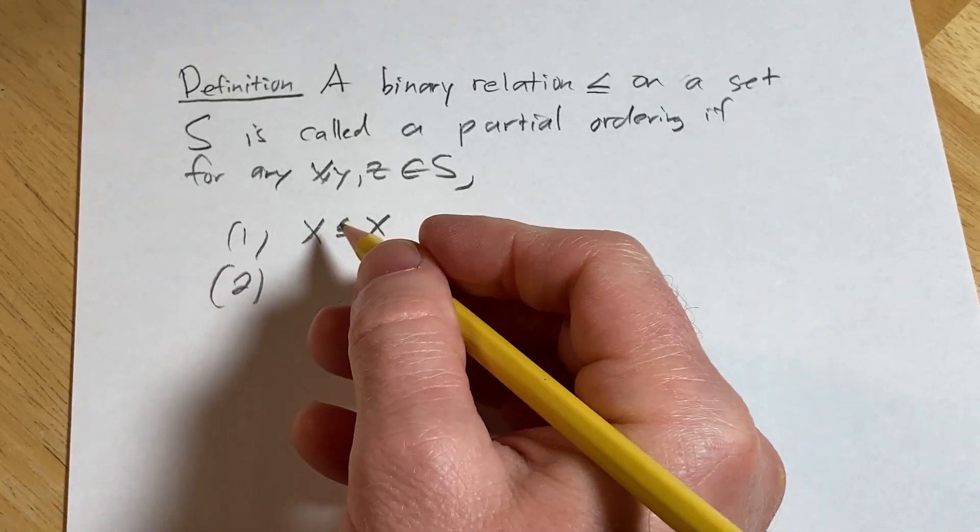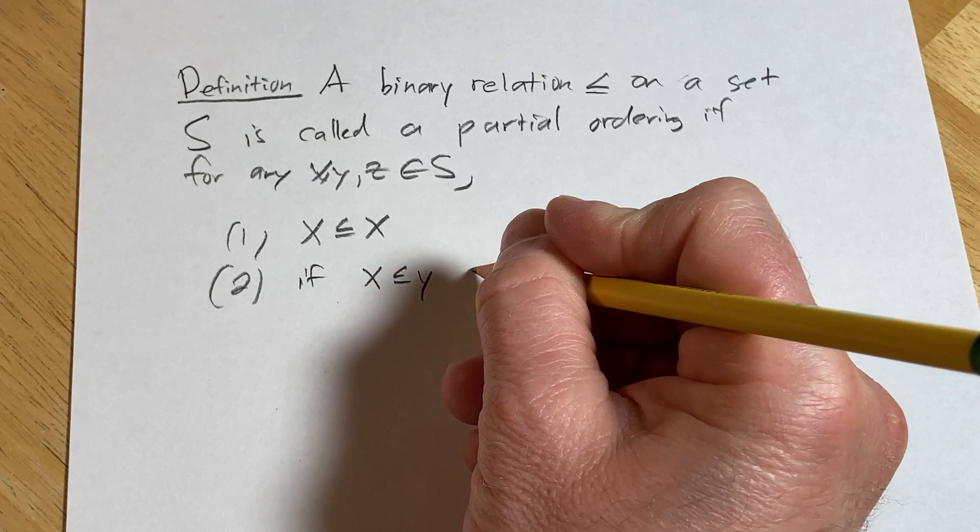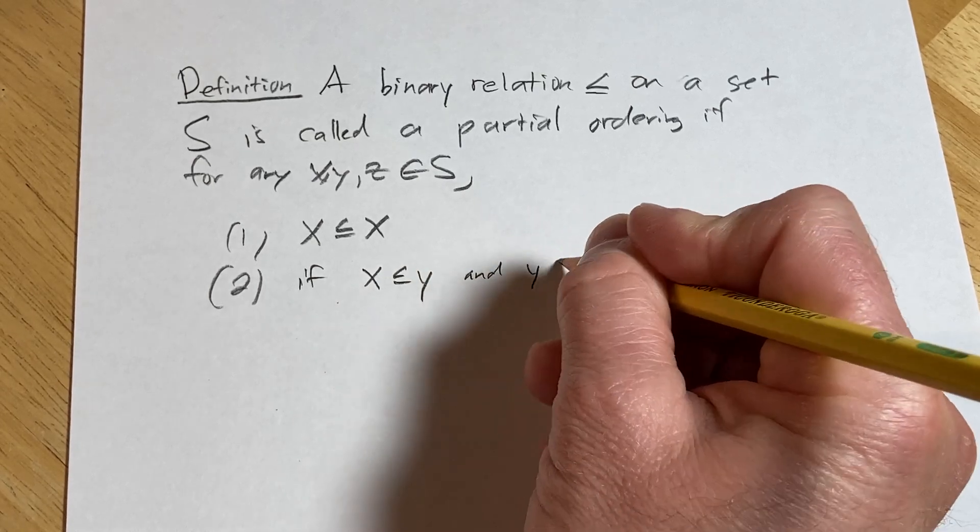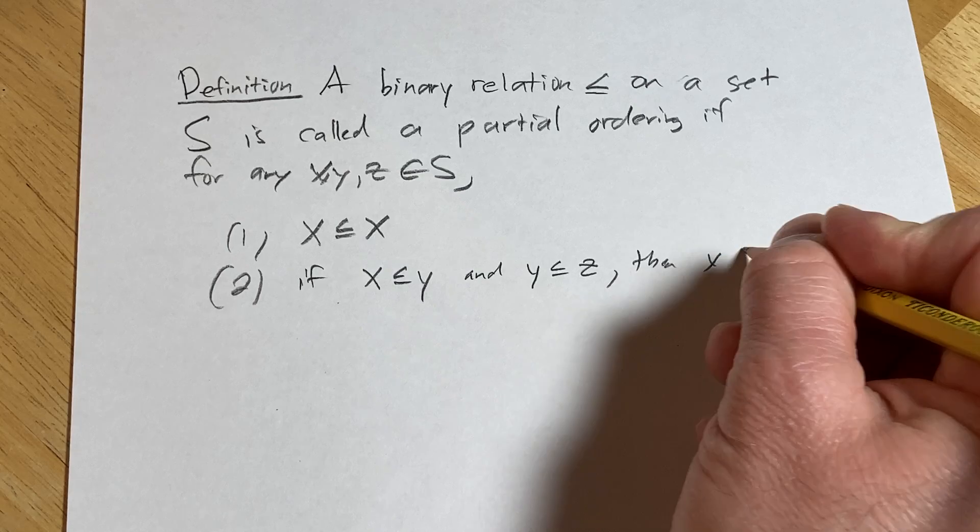Two, if we have X less than or equal to Y, and Y less than or equal to Z, then X is less than or equal to Z.